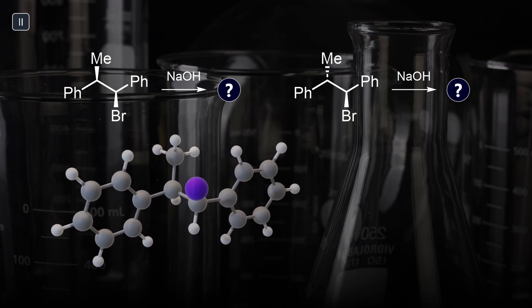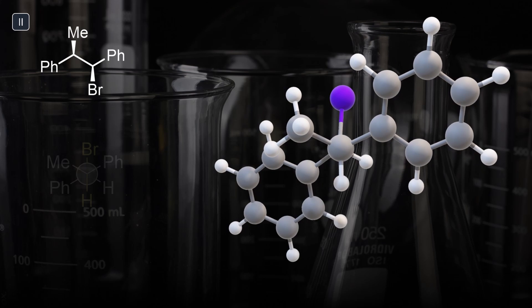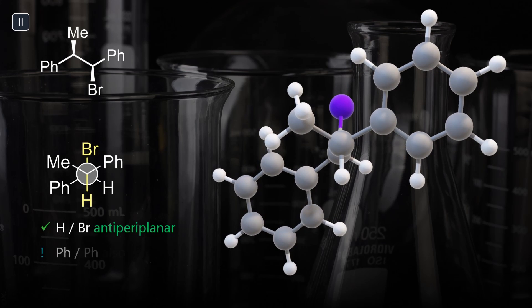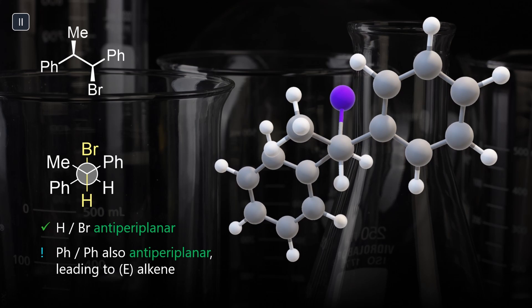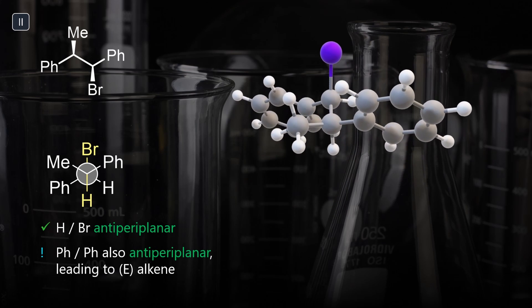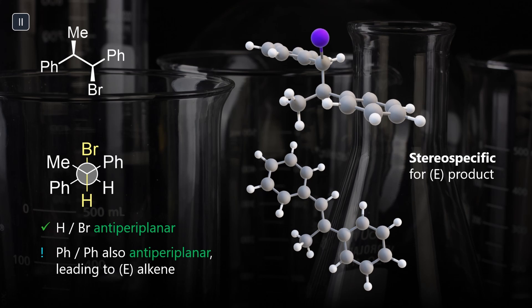We again know our leaving group and there's actually just one hydrogen available. Let's now figure out the conformation again by drawing the Newman projection. If we position H and Br anti, the big phenyl groups also oppose each other. Because of the concerted mechanism, the reaction maintains the arrangement and stereospecifically yields the E-alkene.